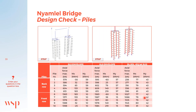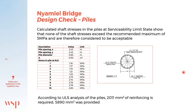A further design check was conducted on the piles. The rigid link models shown were used for the pile design, along with different load envelopes. Results from the STRAP model indicated that the shaft stresses found in the piles at serviceability limit state did not exceed the maximum of 5 MPa and were considered acceptable. The reinforcement required was also less than the reinforcement provided.